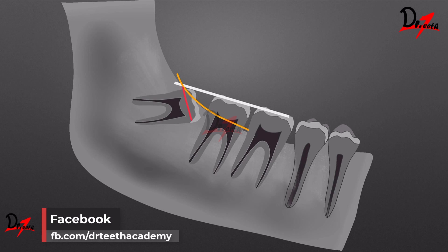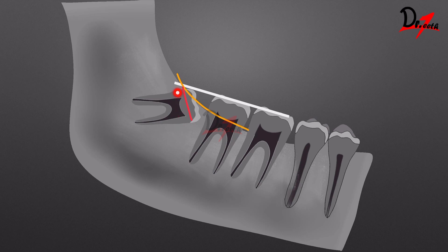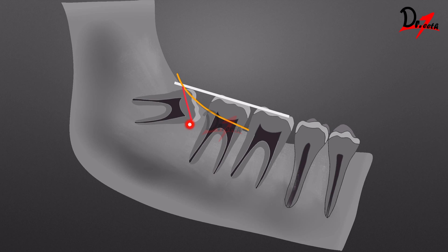Then we have the red line. The red line is drawn perpendicular from the amber line. This is an imaginary point where we will place our elevator. This point is usually at the cemento-enamel junction, that is the CEJ. For a mesial angle impaction, this will be on the CEJ on the mesial surface of the tooth. But if we had a distal angle impaction, it would be on the CEJ on the distal aspect. The length of this line will tell us the difficulty of removal.